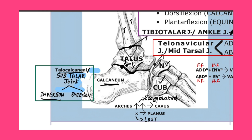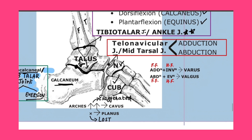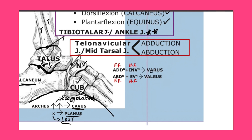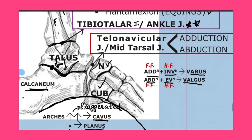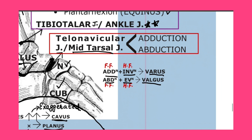The movements at the subtalar joint are inversion and eversion. The arch of the foot: if it is exaggerated it is known as cavus; if it is lost it is known as planus. Varus is adduction plus inversion, and valgus is abduction plus eversion. The talonavicular joint, or mid-tarsal joint, has movements of abduction and adduction.